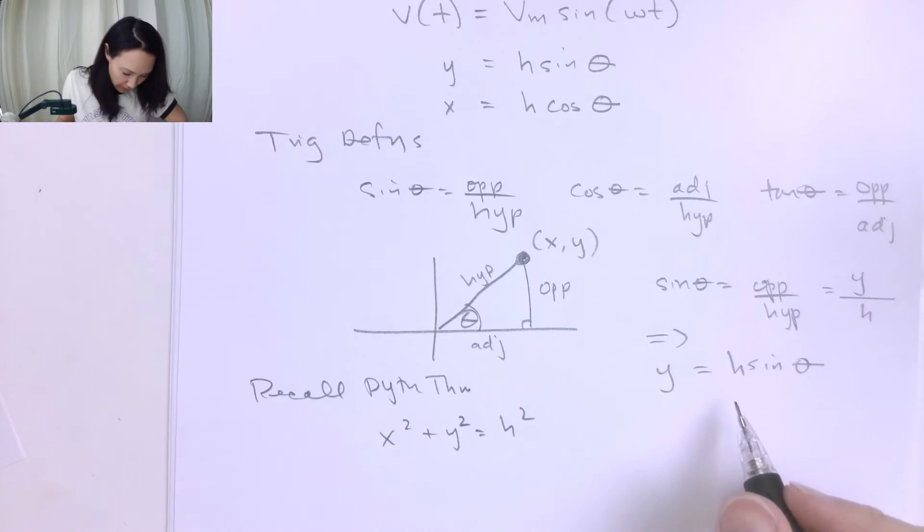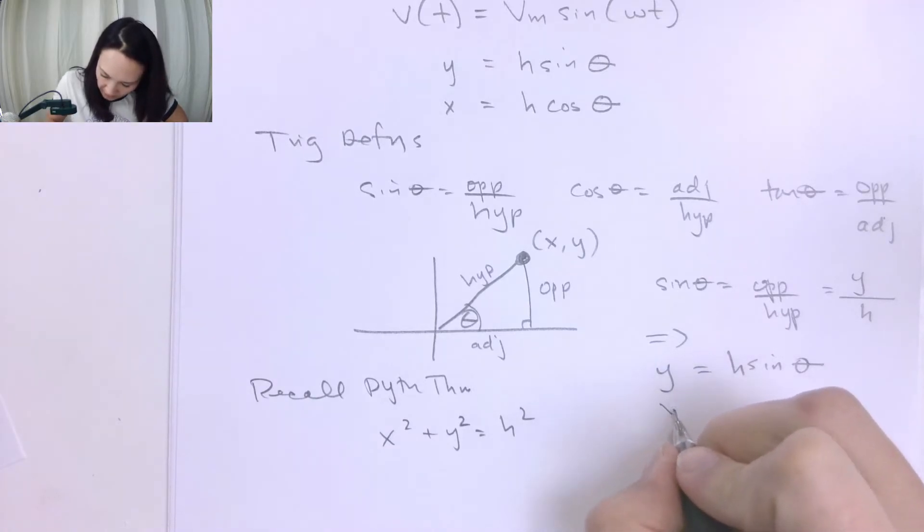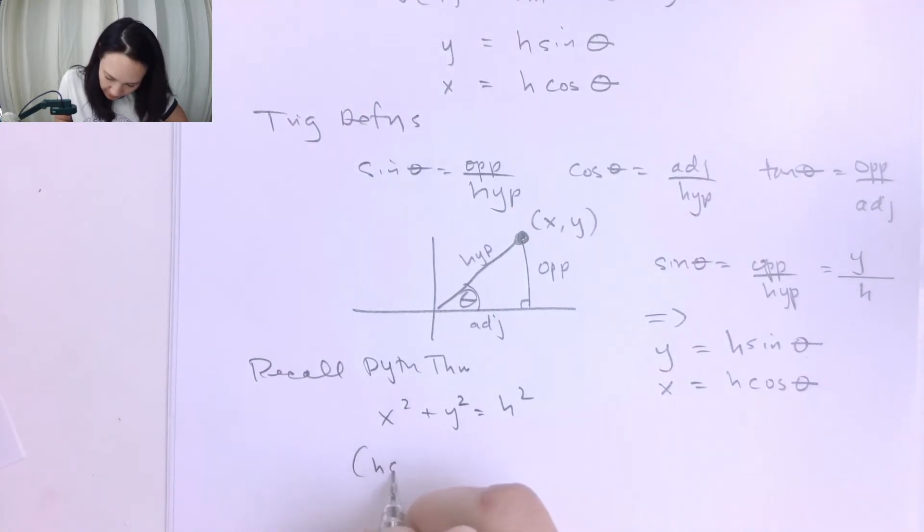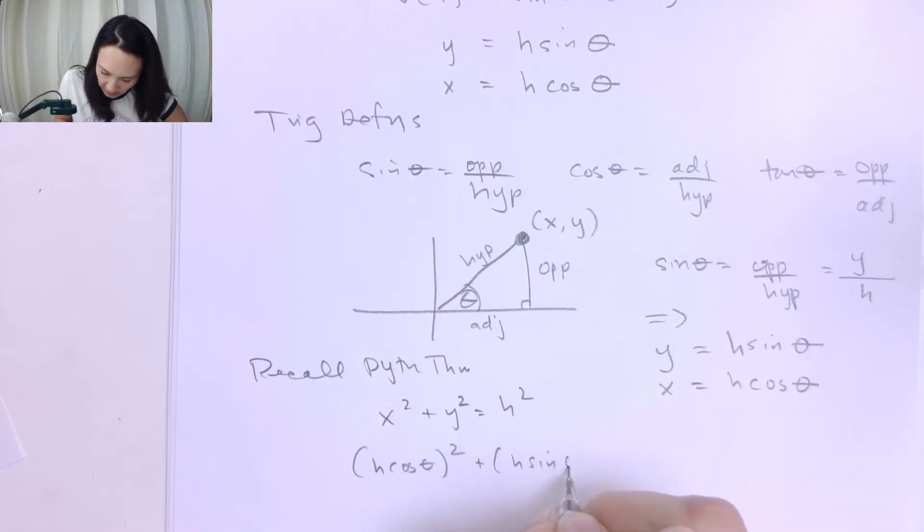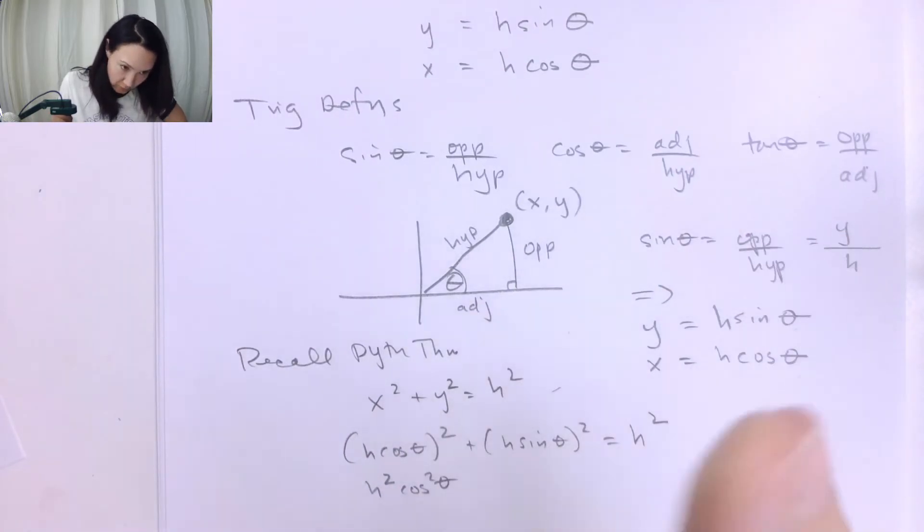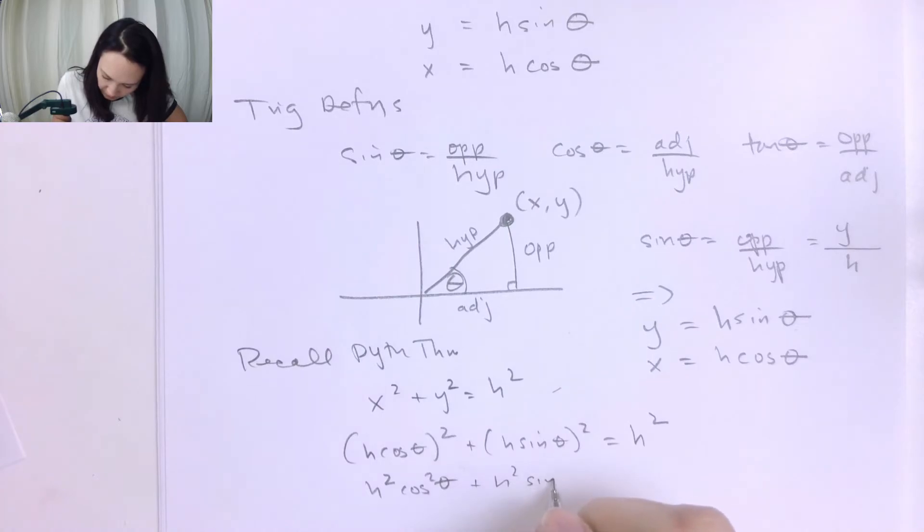Then if we put in these values for X and Y, where X = H cos θ, we would get (H cos θ)² + (H sin θ)² = H². This gives us H² cos² θ plus H² sin² θ equals H².